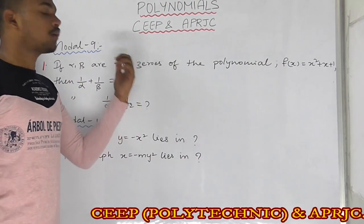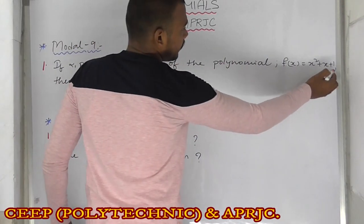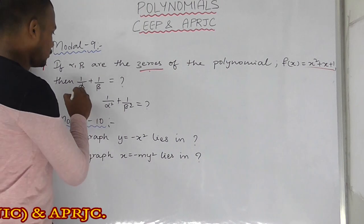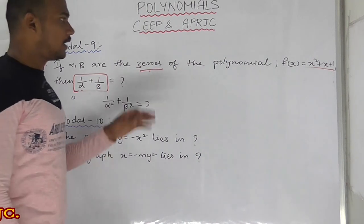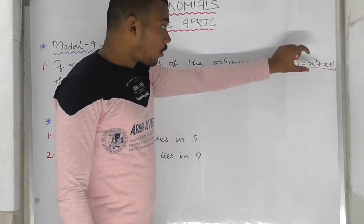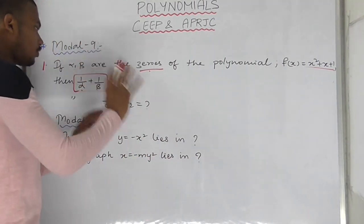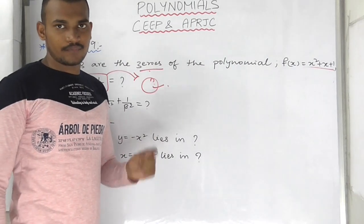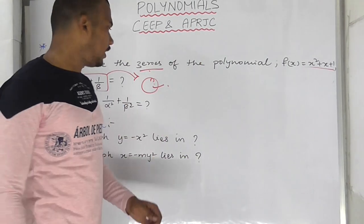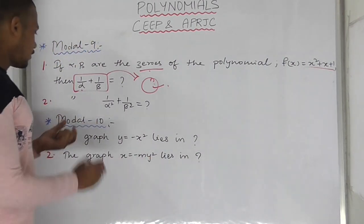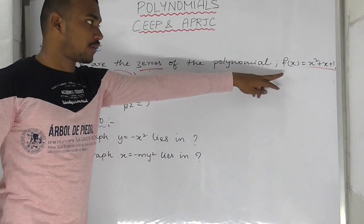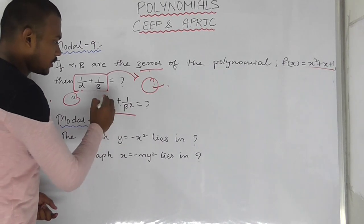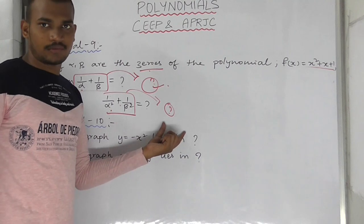The next important model: if alpha and beta are the zeros of the polynomial x squared plus x plus 1, find 1 by alpha plus 1 by beta. That is nothing but the value — we can easily select from options. Same: if alpha and beta are the zeros of f(x) equals x squared plus x plus 1, find 1 by alpha squared plus 1 by beta squared. Solve using LCM. This is model number 9.